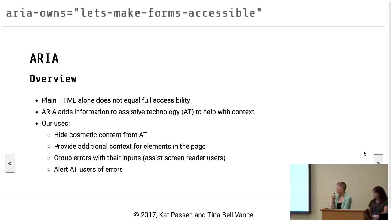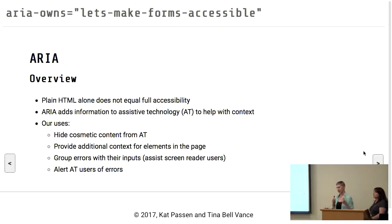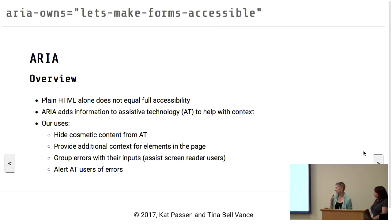So let's talk about fixing it. Plain HTML alone is not accessibility on its own — there is always something more you can do to help out, because this just helps at a bare minimum. Somebody can actually use your stuff and it's not technically inaccessible, but somebody's still going to have a hard time. So what we're going to do is use ARIA to give some extra context to all the assistive technologies that could be using our page. We'll hide cosmetic content, provide extra context, group errors with inputs, and alert people when there are errors.